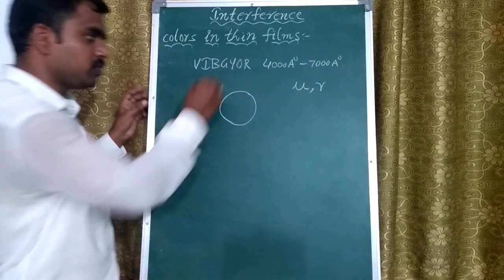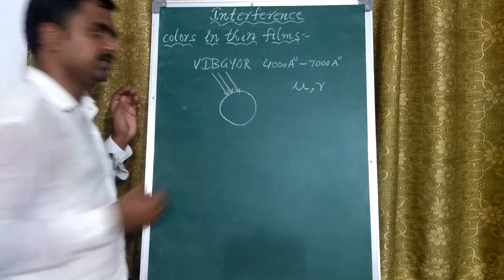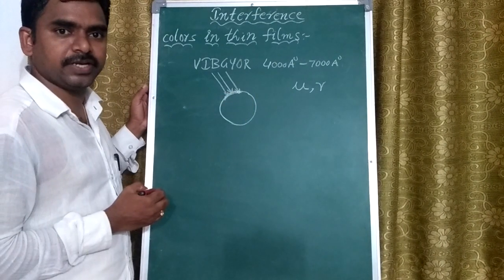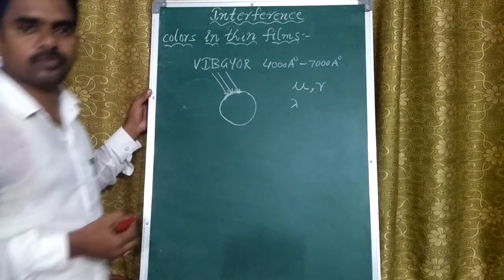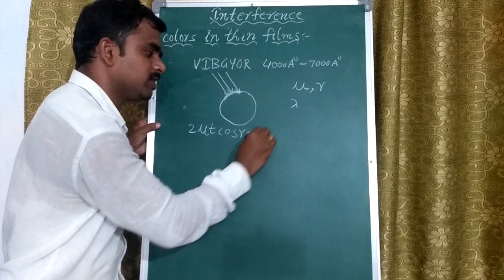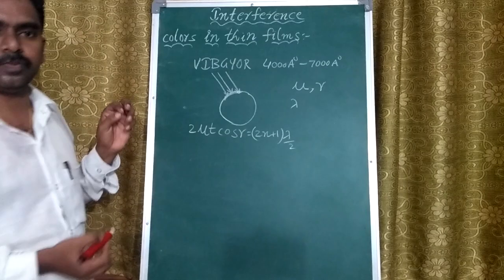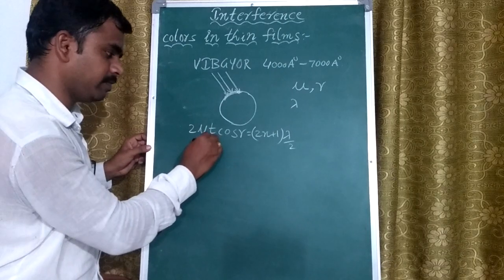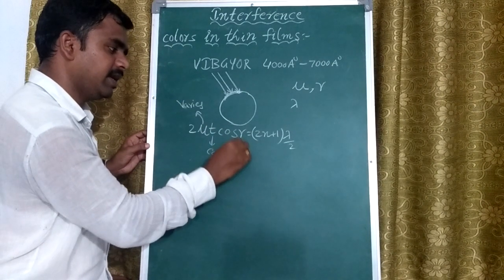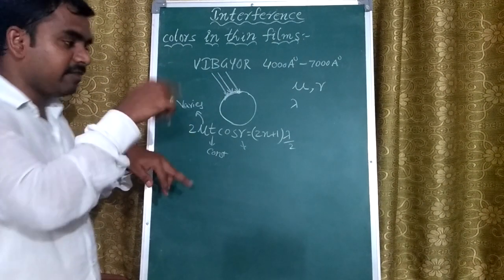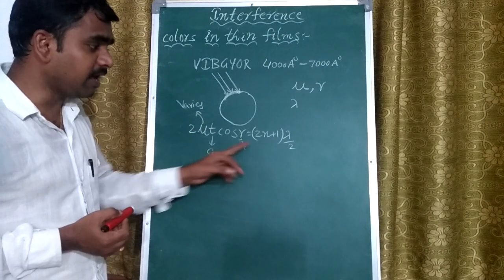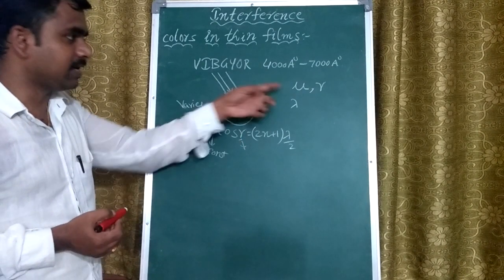When we expose sunlight or white light onto the soap bubble, all rays are incident on its curved surface. Due to the curved surface, at any particular point the refractive index μ varies and the angle of incidence varies, so the angle of refraction r also varies. Therefore, the path difference varies based on the color.